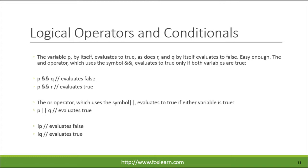The variable p by itself evaluates to true, as does r, and q by itself evaluates to false. The AND operator, which uses the symbol &&, evaluates to true only if both variables are true.